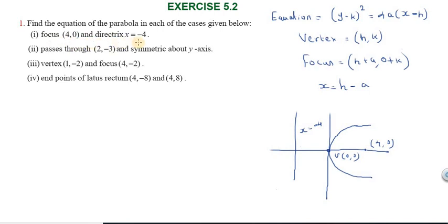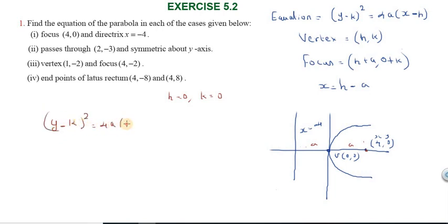First subdivision: Focus is (4, 0) and directrix is x = −4. The focus is on the x-axis, so the vertex is at (0, 0). Here h = 0, k = 0. The equation is (y − k)² = 4a(x − h). Substituting: y² = 4a·x. Since a = 4, we get y² = 16x.